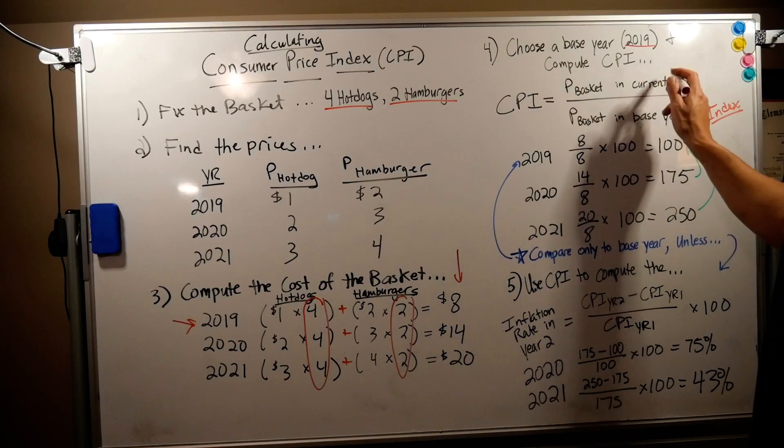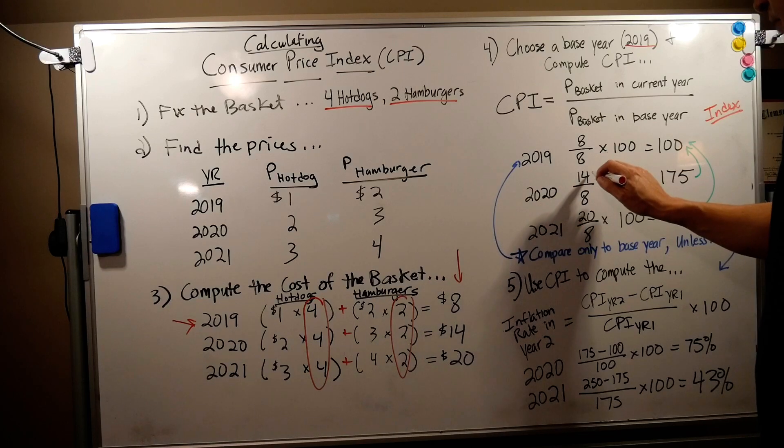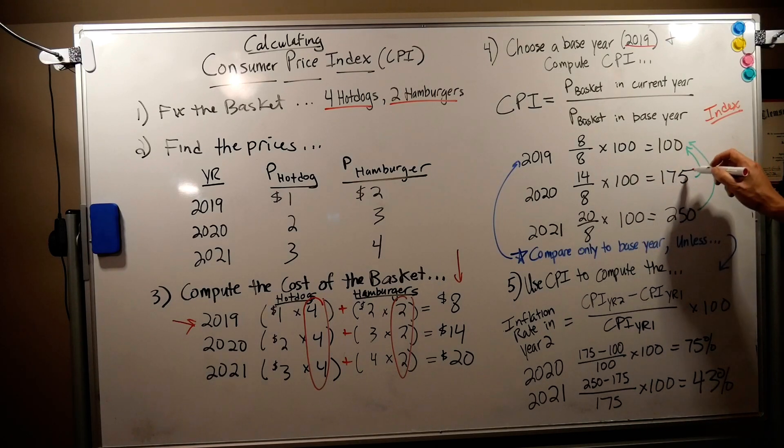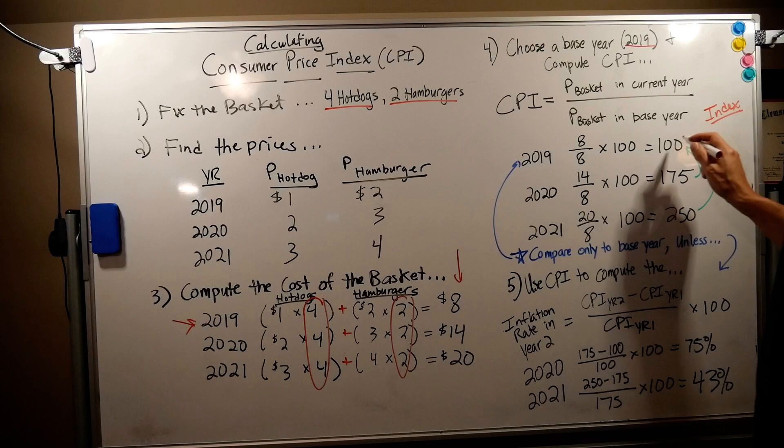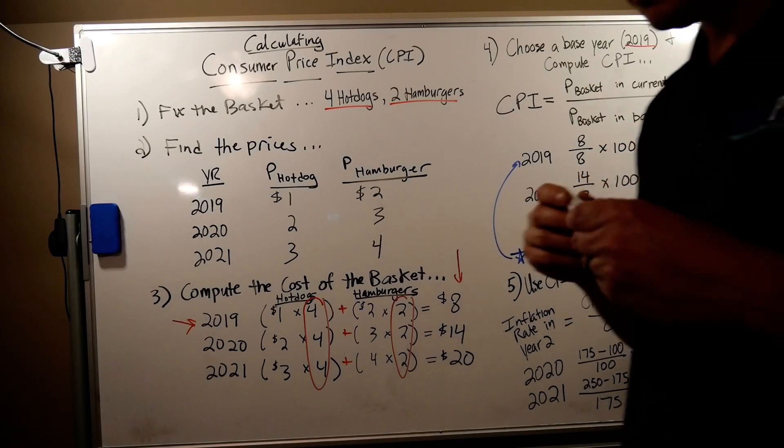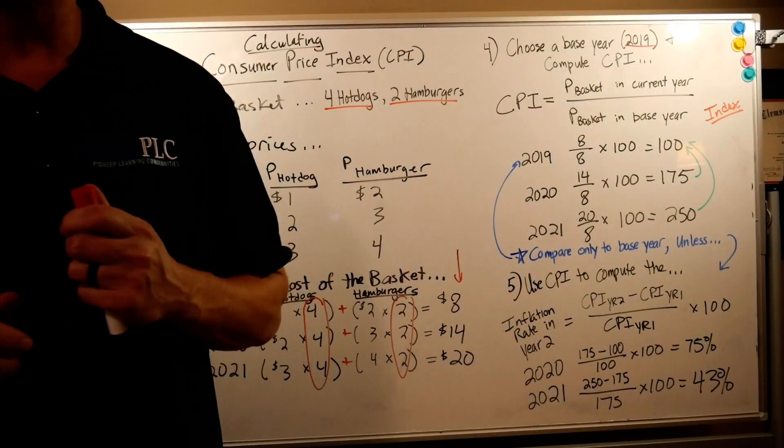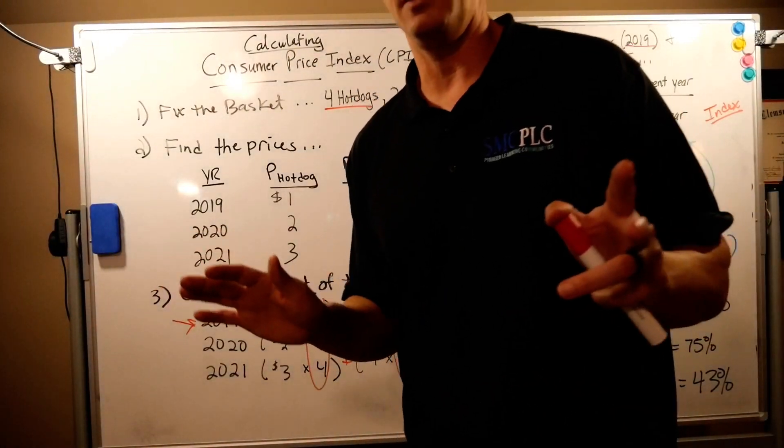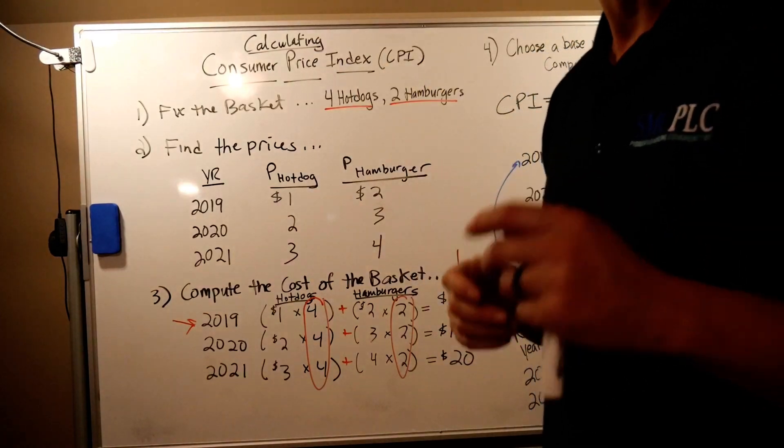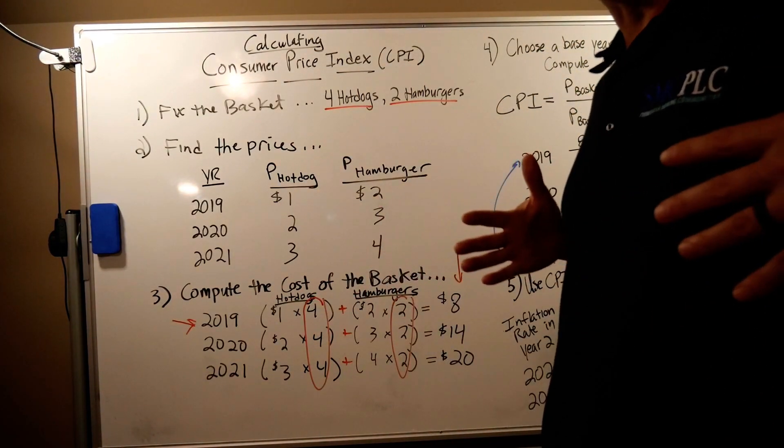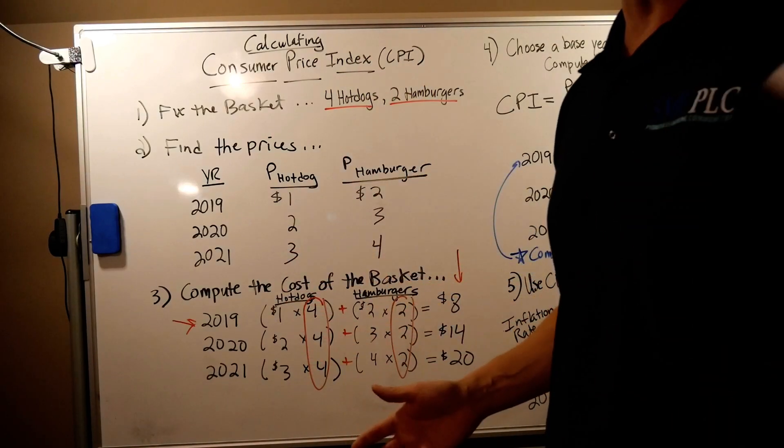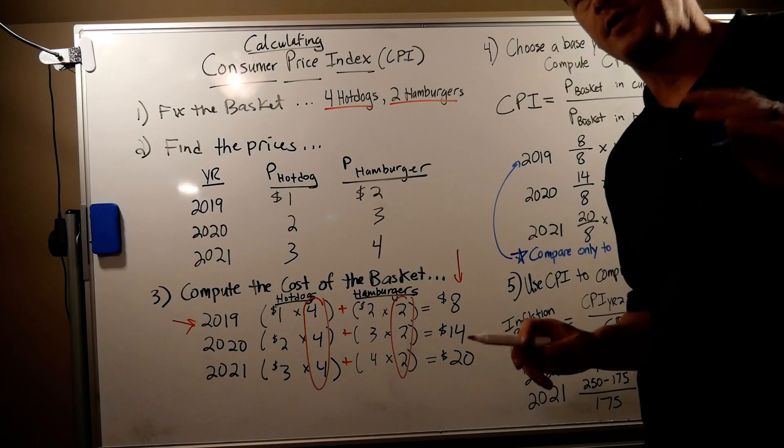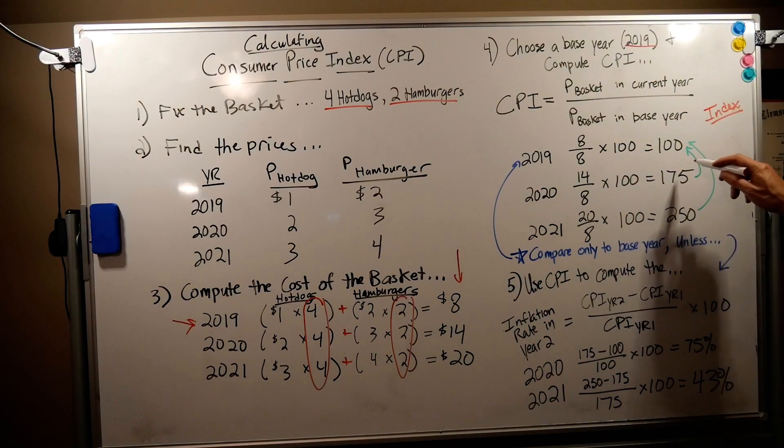2020, our current basket cost is $14, our base year basket cost was eight dollars times 100 is 175. We now know there was 75 percent inflation between the base year of 2019 to 2020. Now some of you are going to say hey the GDP we did the same calculation and it was 71 percent. Yes and no, it was a similar calculation but keep in mind we were doing GDP which was all consumption of hot dogs and hamburgers. Here is just your particular list. So individual people will be affected similarly but not exactly the same as the entire economy. It kind of depends on where they live, what they're buying, all that type of thing. You can compare back to the base year. Don't do anything else. You can only compare to the base year here.